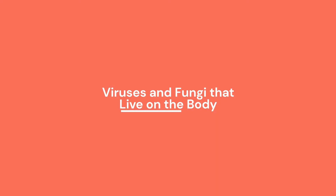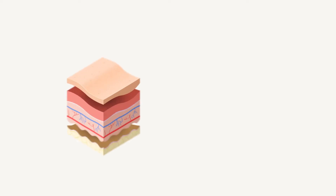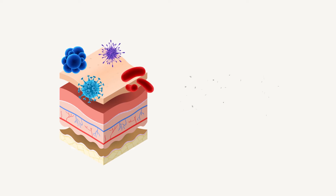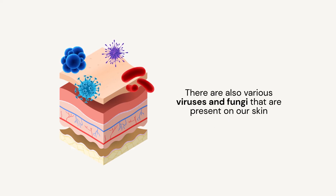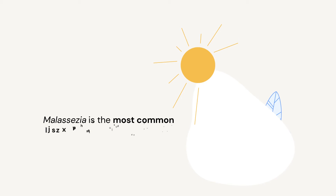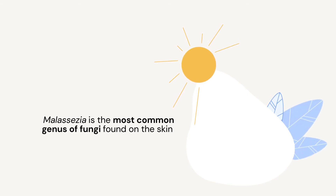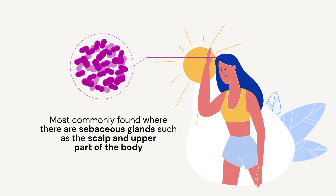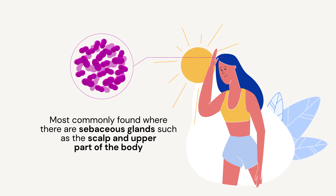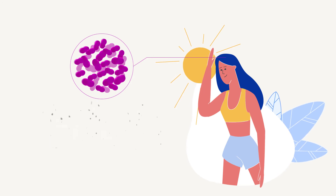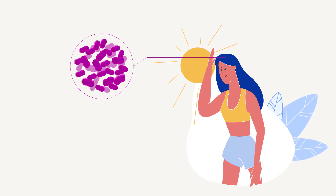Viruses and fungi that live on the body: As part of the microbiota that lives on our body, there are also various viruses and fungi present on our skin. Malassezia is the most common genus of fungi found on the skin and is most commonly found where there are sebaceous glands, such as the scalp and upper part of the body. These are the fungi responsible for conditions such as dandruff.